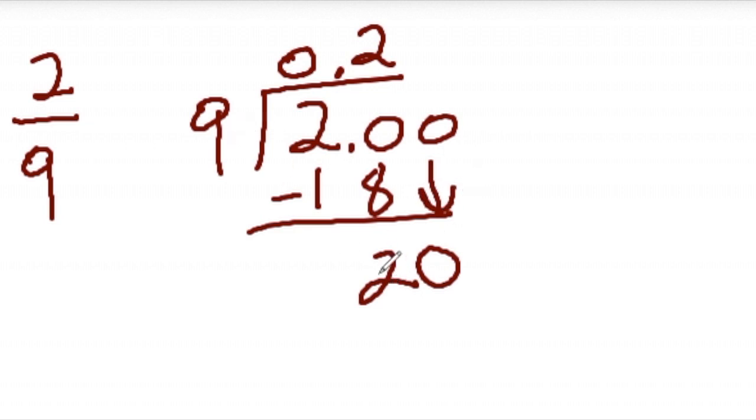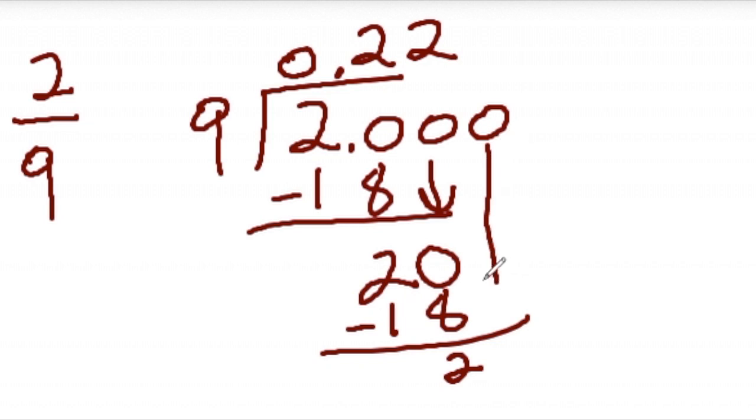And now we have nine into 20. Nine goes into 20 again, two times. Two times nine is 18. It's another two. And so we can bring down another zero. And can you see how this is going to go on forever?